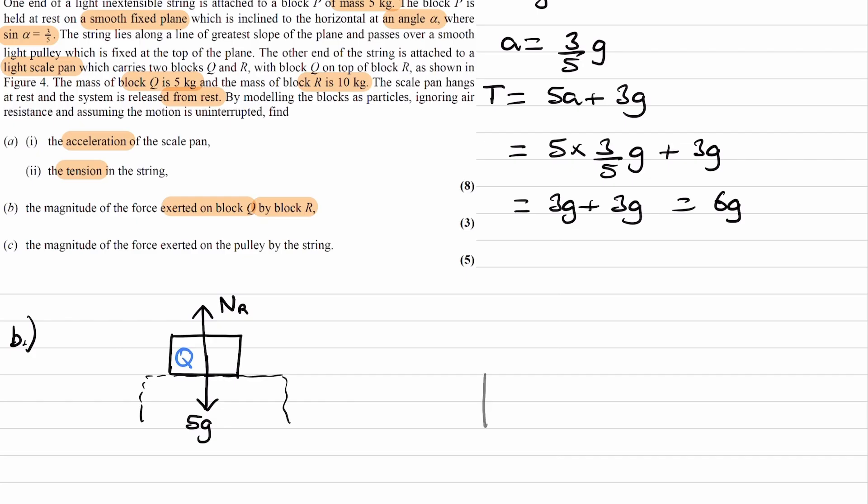And then for block R. So, here is block R. So, block R experiences, again, its own weight force, same as block Q would. But in this case, that would be 10G. It also experiences a normal contact force. But in this case, it's experiencing that from the bottom of the scale pan. Or at least that's one place where it's experiencing that force. We don't know what that force is, so I'm just going to call that N from P. Normal reaction force from P, where P is the scale pan. Block Q rests atop block R. So, this is Q. This was R in the other diagram.